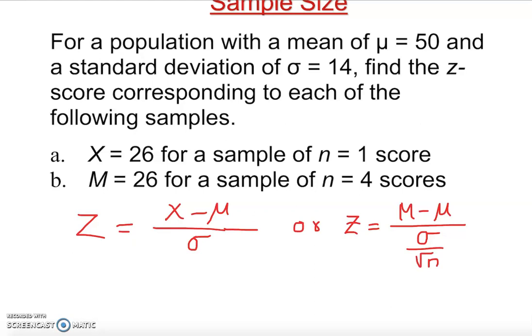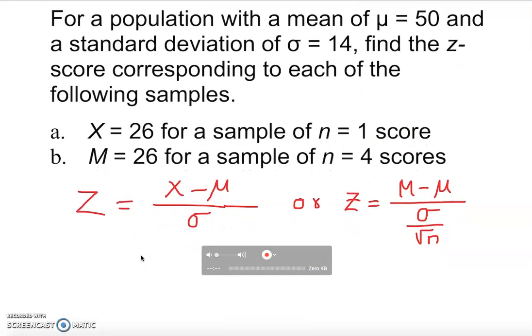Some of you say, what is this all of a sudden? We're using the first formula when you have one individual score. Or we use this one, even you use this one up here, it's going to be the same thing. Your answer is going to be the same. But the second one, the sample mean is given, because it's more than one score.